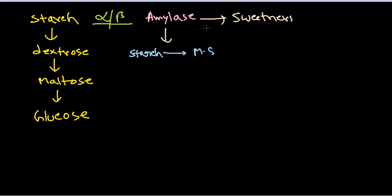Industrially, amylase is produced from microorganisms. While amylase can be produced by plants, animals, or microbes, at industrial scale we rely on microbes because the amylase produced from microbes is much more heat resistant and has a more optimal pH and temperature working range than plant-derived amylase.